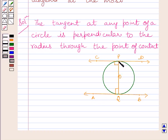OP is the radius, CD is the tangent and P is the point of contact here. So OP is perpendicular to CD. So we can write OQ is perpendicular to AB and OP is perpendicular to CD.